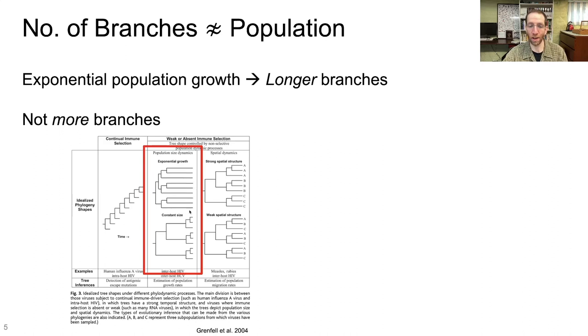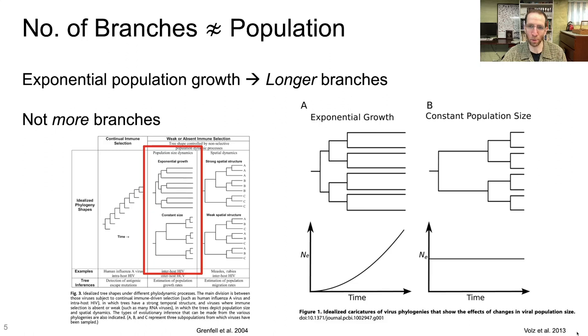That's a little bit small. Here's a bigger and simpler figure from a 2013 paper showing the same thing. Here we have exponential growth, you see the branches are longer. Here we have constant population size, that's where you see your increasing number of branches as time passes.